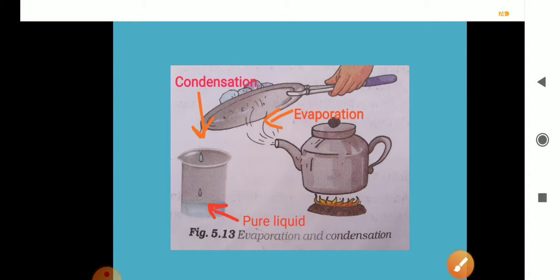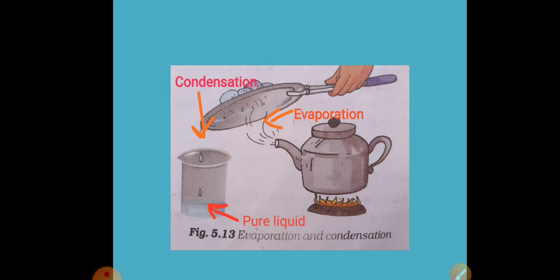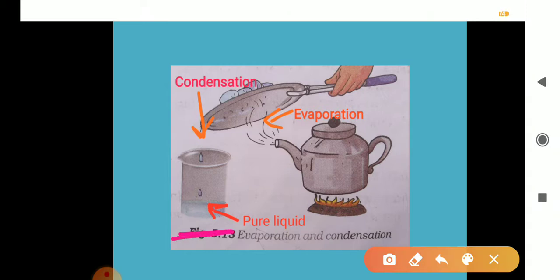Suppose we take salty water or sweet water with sugar dissolved in it. The water will convert into vapour, then condense, and we can get pure liquid in the beaker. The sugar or salt — whichever you are using — will be left behind in the kettle. This is the process of separating soluble solids from their solution.